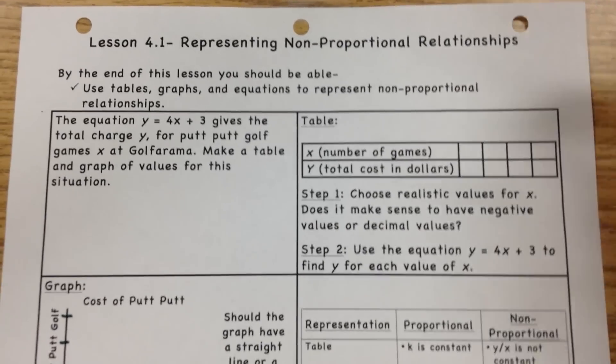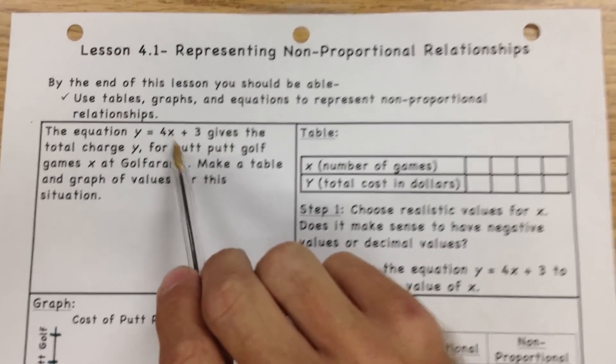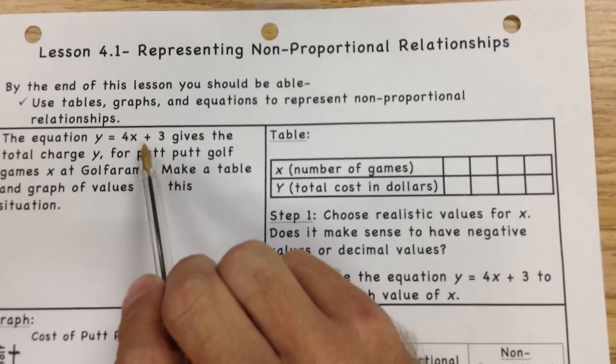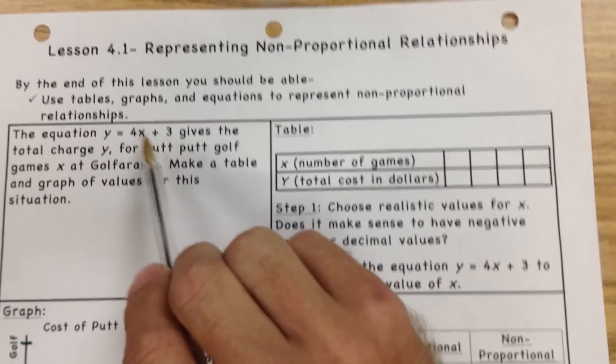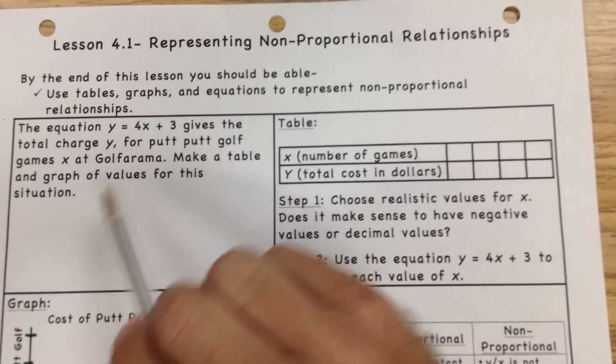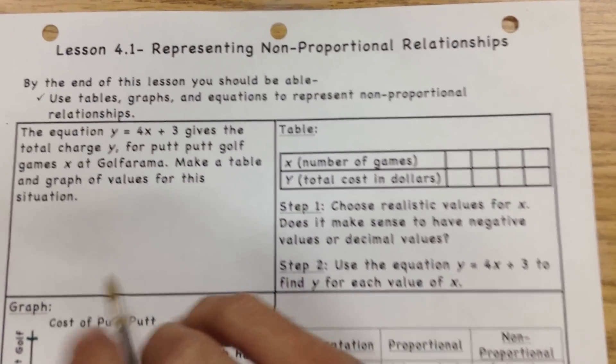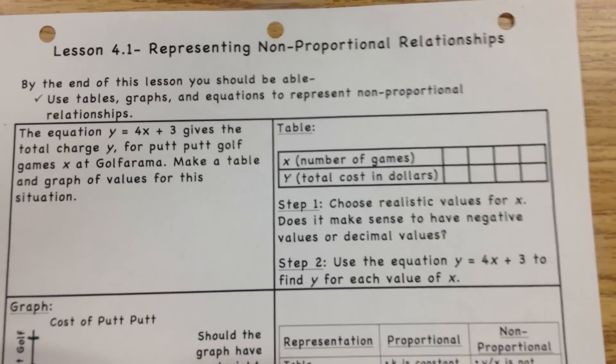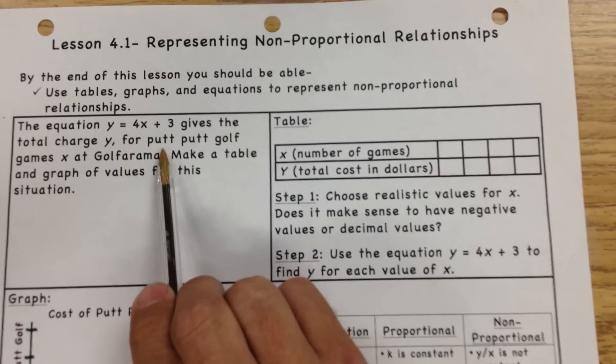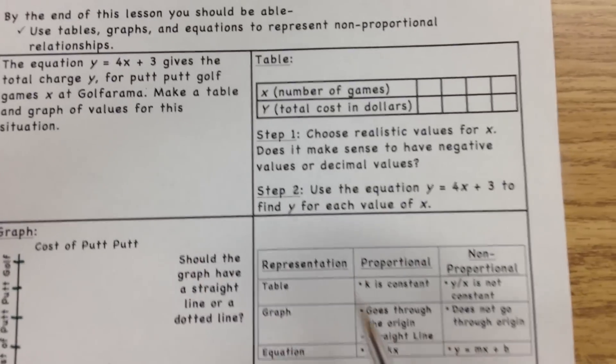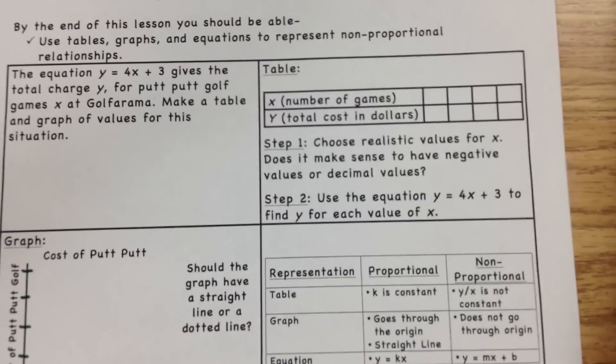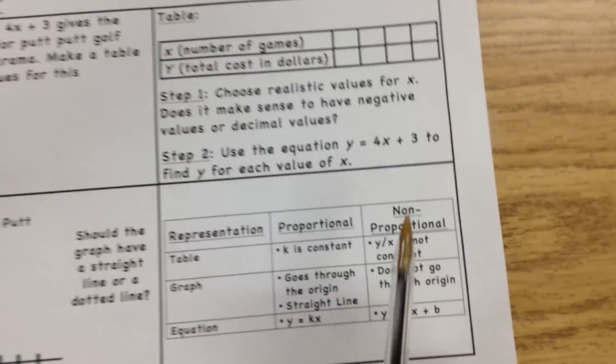Whenever we do those, what we're going to look for - like this equation we're going to work with, see how it says plus three - anytime you have a plus or a minus after the x part, you're going to have a graph that does not go through the middle. So we're going to do this in an equation, a table or chart, and then we're going to graph it, and then we're going to talk about some ways to figure out whether they are proportional or non-proportional.